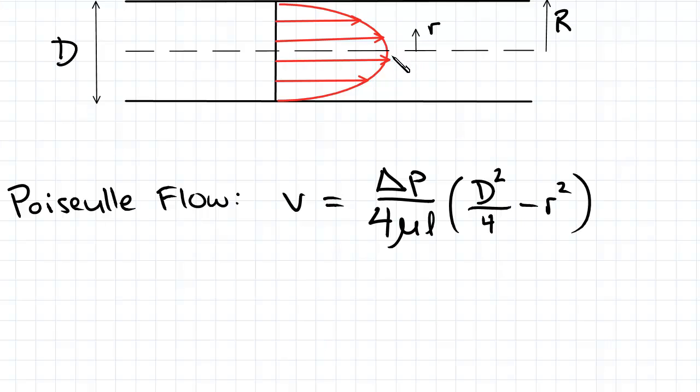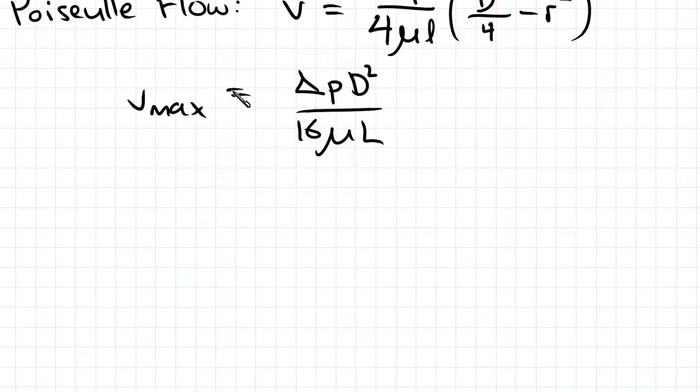So the center of the parabolic velocity profile is the maximum, or V max, and that's when r is zero. So if we sub in r is zero there, we get delta P D squared over 16 mu L. So the Poiseuille flow can be rewritten. If we sub that into our main equation, we get V equals V max times one minus...